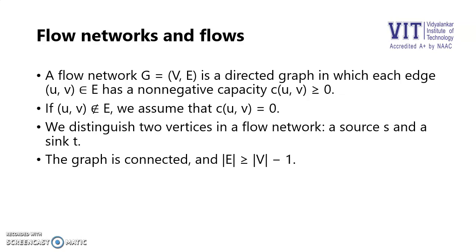Now we need to distinguish two vertices in a flow network: one is a source and another is sink. The graph has to be a connected graph so that the number of edges will be greater than or equal to number of vertices minus 1. That's the property of a connected graph.